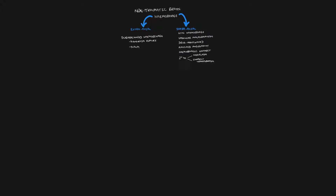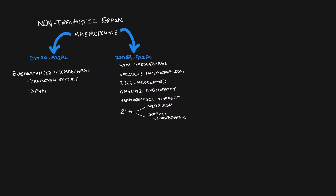Now let's focus on intra-axial non-traumatic brain haemorrhages. Hypertensive haemorrhages tend to be centrally located, such as in the putamen. In contrast, amyloid angiopathy tends to produce small foci of haemorrhage which are peripherally based. Vascular malformations include AVMs and cavernous malformations. When talking about underlying neoplasms which can bleed, the most common cause is a glioblastoma.